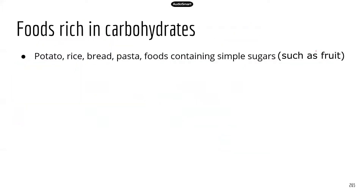Foods that have a lot of carbohydrates include potatoes, rice, bread, and pasta. Foods containing simple sugars are also part of the carbohydrate group.